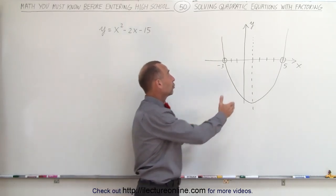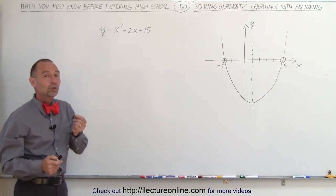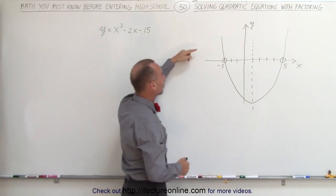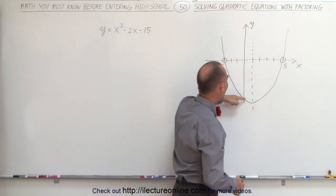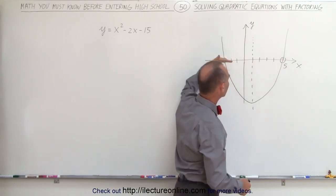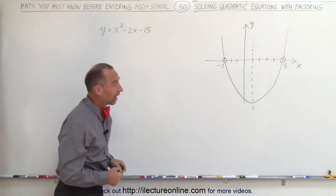So how do we do that with something like this? The first thing we do is we set y = 0, because notice when the graph crosses the x-axis, that is at a point where y = 0 because it is on the x-axis.